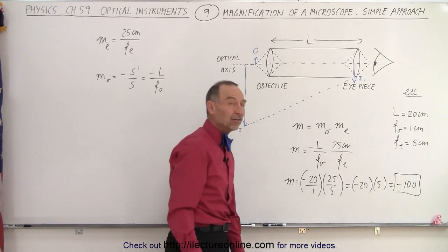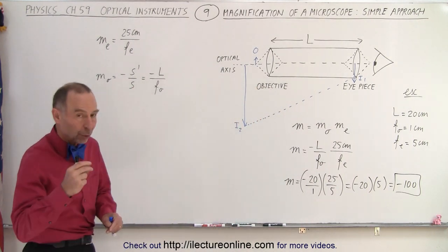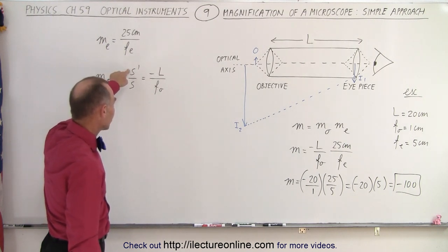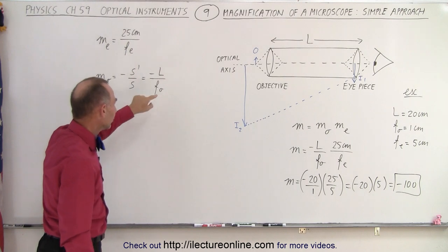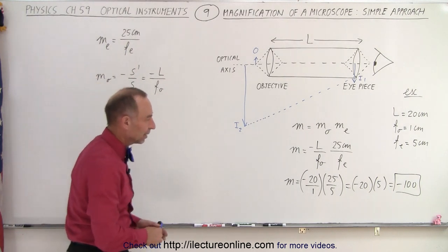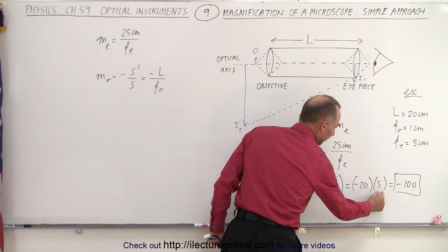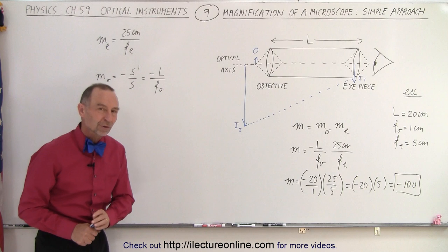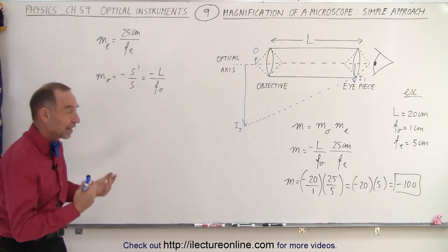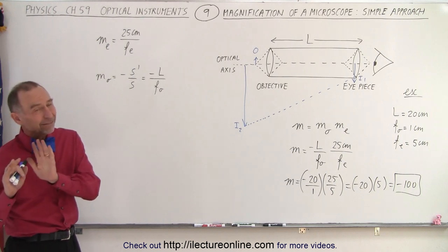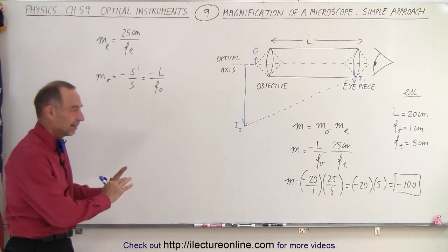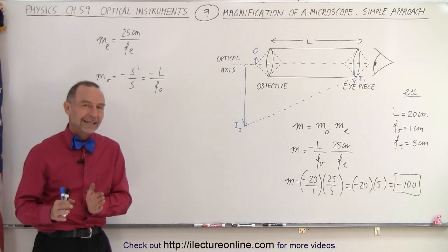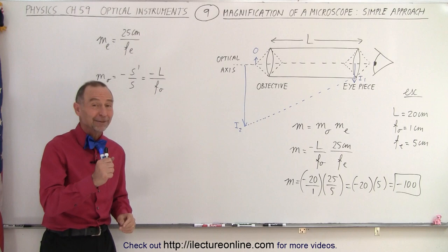The magnification of this microscope, in simplistic terms, is very quickly found by letting the image distance for the objective equal L and the object distance equal the focal length. The magnification of the objective is minus 20, the magnification of the eyepiece is 5, giving a total magnification of minus 100. But that's not the exact magnification — if you want the exact magnification, watch the next video where we'll show how to do it in an exact fashion.